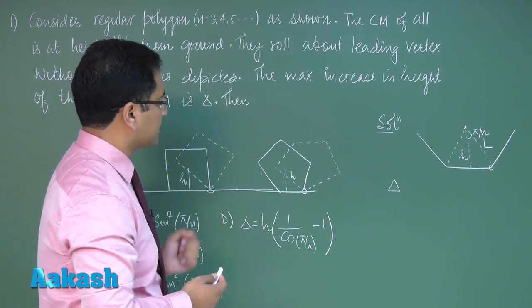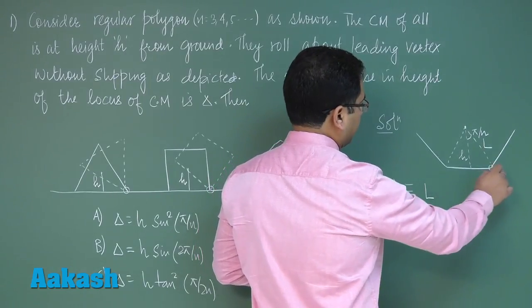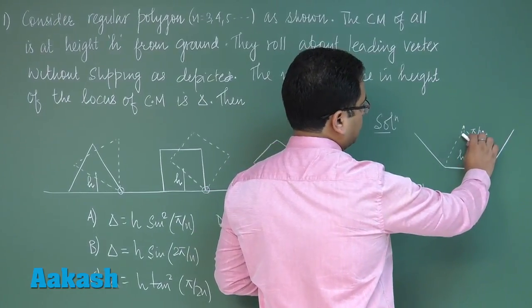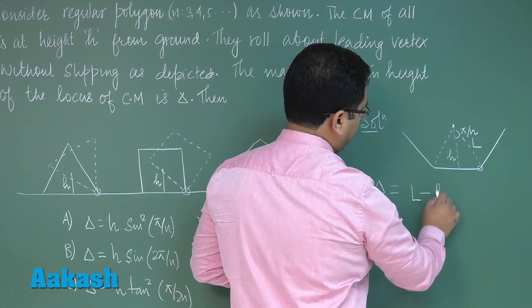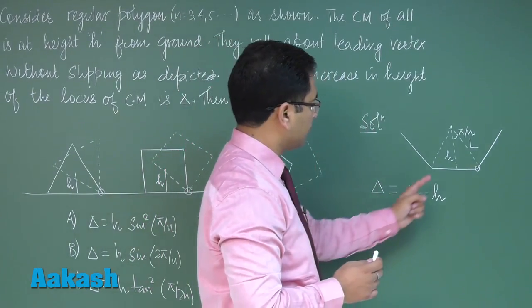So delta, which is the maximum displacement of the center of mass, the maximum increase in height of the locus of center of mass, that would straightforward be l when it would be at the topmost point minus h, where h is the initial height of the center of mass from the ground.